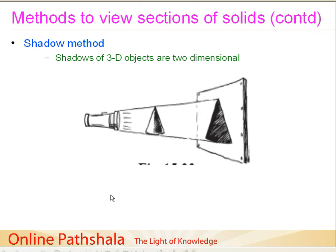This is the type of arrangement we use for the shadow method. We take a blank screen, we have a solid, and we need a light source. For example, you can take a torch and make the room comfortably dark — not too brightly lit. Turn on the torch and put the object in between the torch and the screen. You will see a shadow cast on the screen because the light gets obstructed. This shadow represents the cross-section and is a two-dimensional representation.